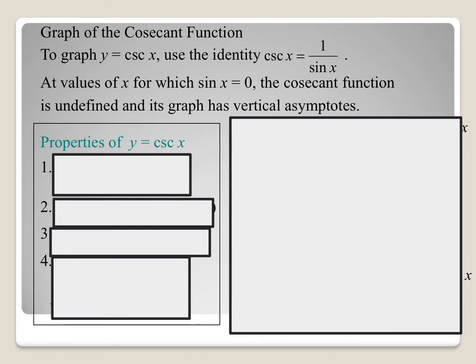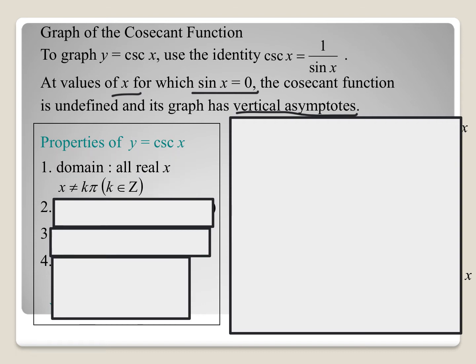When we're trying to graph the cosecant function, we're going to use the reciprocal identity that the cosecant of x is equal to 1 over sine of x. That's going to allow us to identify x values where sine of x equals 0, which would identify our vertical asymptotes. For our domain, we have all real x such that x does not equal k times pi, because plugging multiples of pi into sine of x gives us 0, which is how we get our vertical asymptotes.